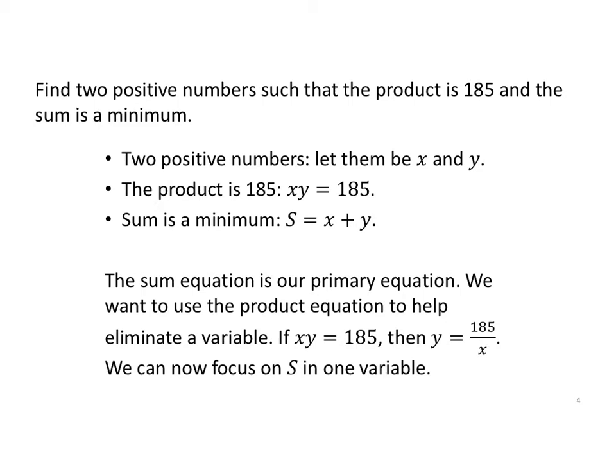So our first problem: Find two positive numbers such that the product is 185 and the sum is a minimum. First, find two positive numbers. Let them be x and y.